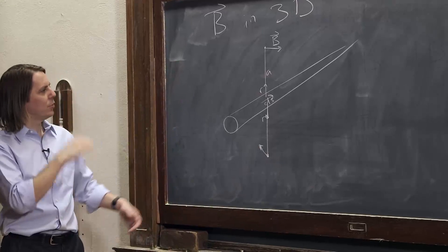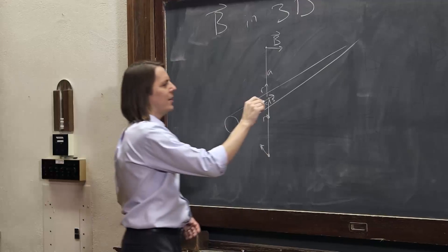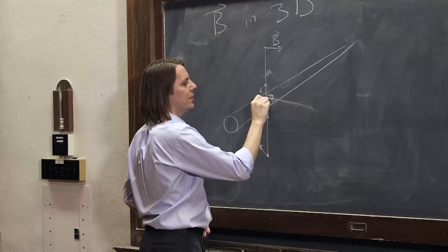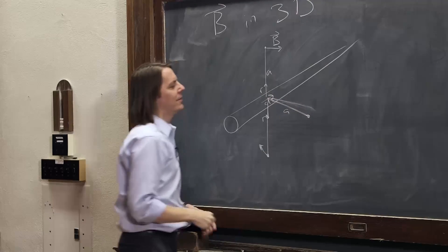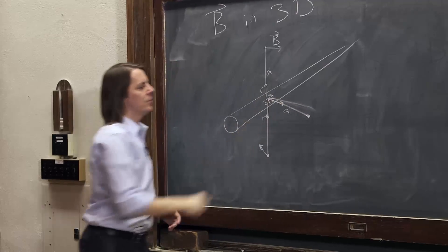So we have it coming out this way and going in that way. What if we came out to the side? Let me draw it at a distance A like that.